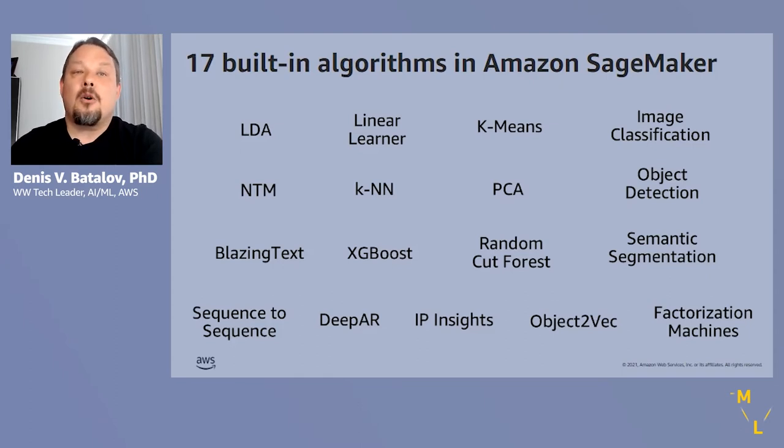You see here all the 17 built-in algorithms that SageMaker supports natively. You are, of course, not limited to just these as SageMaker supports all the popular frameworks such as TensorFlow, PyTorch, MXNet, Chainer, Scikit-learn, and others using which you can build your own algorithms. But why write code when you can use one of these popular algorithms for your use case?